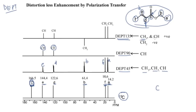In DEPT 135, you get positive peaks for CH3 and CH units. Carbons a and f are both CH3, and d and e are CH, so you get positive peaks for a, f, d, and e. Carbon b is a CH2 unit, so it gives a negative peak — the peak appears on the downside. This is how DEPT 135 differentiates between CH2 and the other hydrogen-containing carbons.